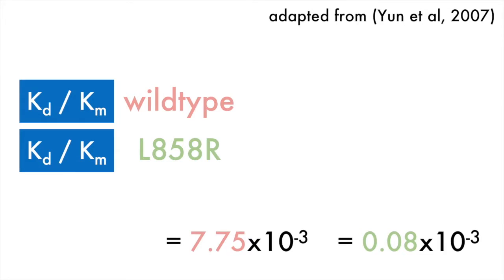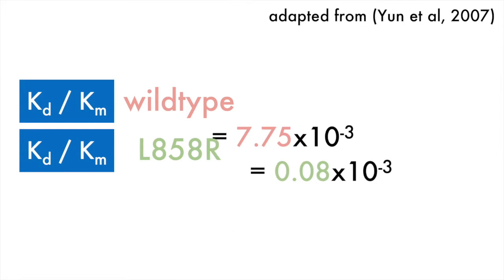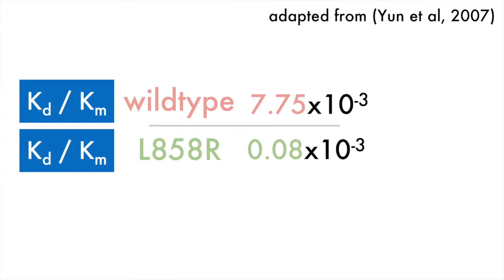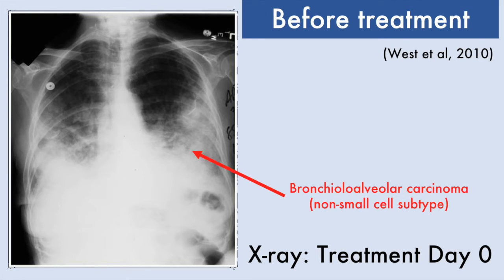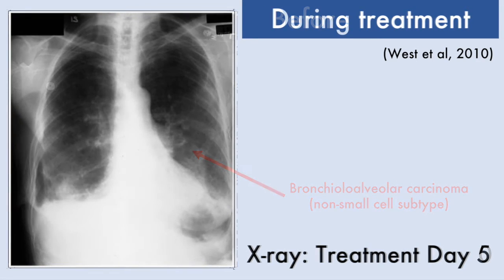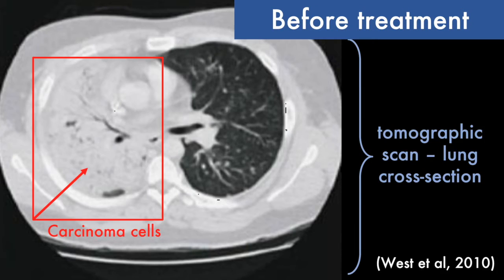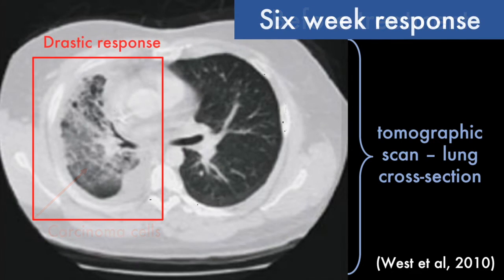Youn and colleagues measured this metric using fluorescence assays, and the result shows that gefitinib is about a hundred times as potent against L858R mutants as it is against wild-type cells. Clinically, CT scans and X-rays conducted on gefitinib-treated patients indicate the drug's potent anti-tumor effect during the first nine months of treatment.